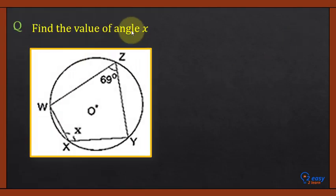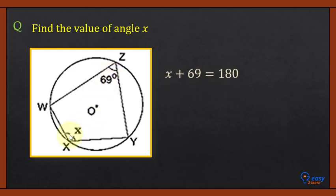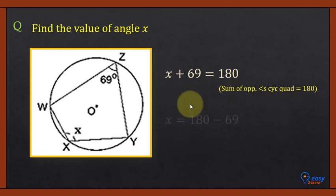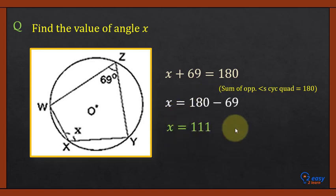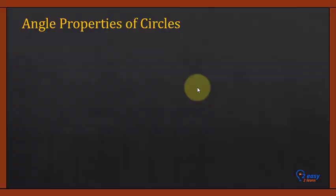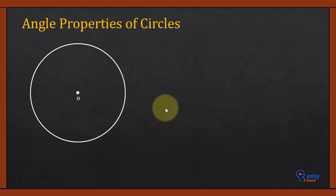Let's solve a question: find the value of x. XYZW is a cyclic quadrilateral — X, Y, Z, and W are vertices on the circumference of the circle. We apply the property that the sum of opposite angles equals 180 degrees, so x plus 69 equals 180. Subtract 69 from 180, and you get x equals 111 degrees.